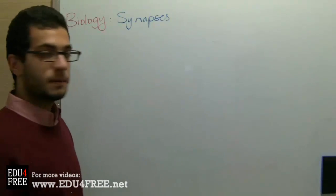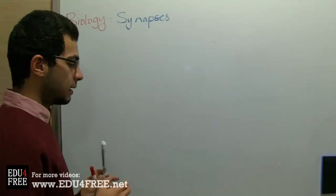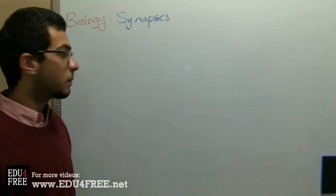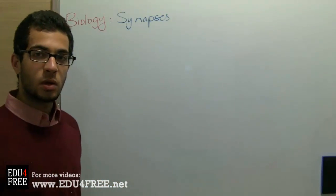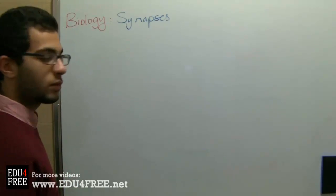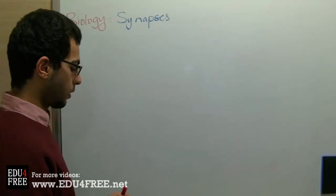First, the synapse is defined as the sites between the terminal arborizations of the axon of one neuron and the dendrites of the following neuron.